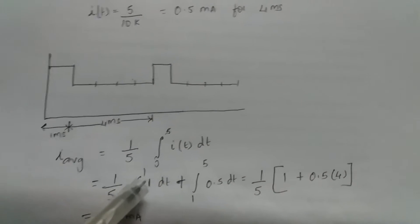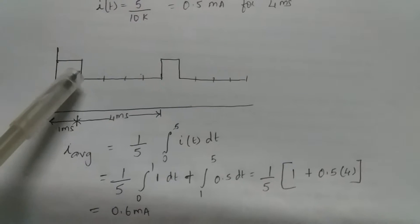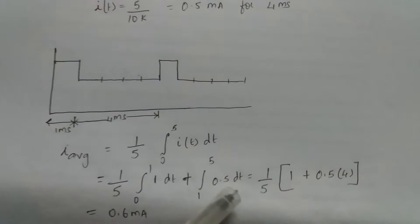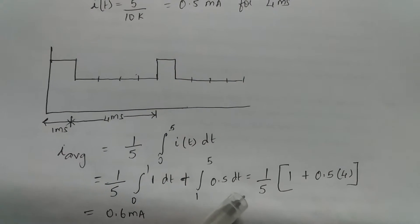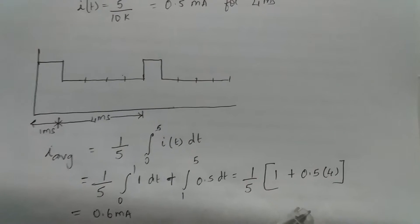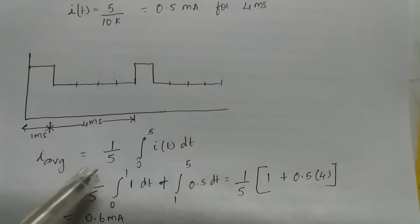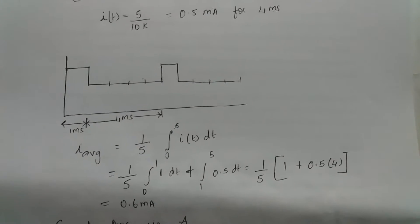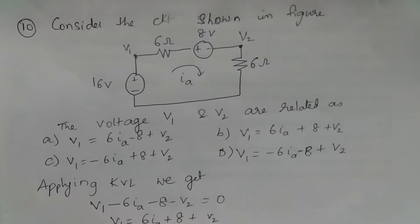So 1 by 5 times 1 plus 0.5 times 4. If you do the integration, you get 0.6 milliamps. So the correct answer is A. Now let's have a look at the other question.